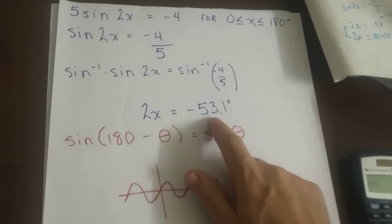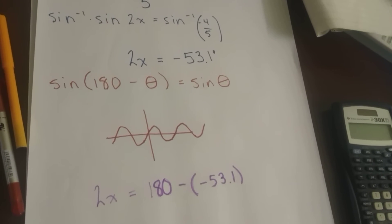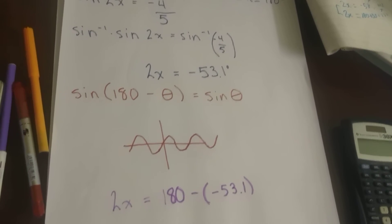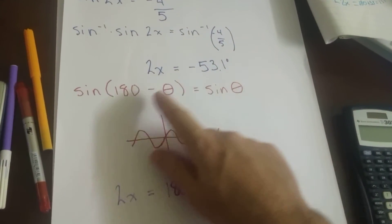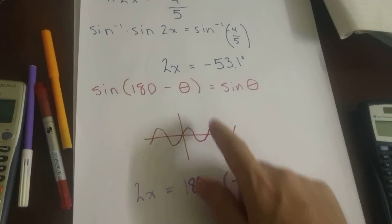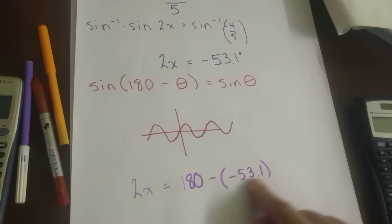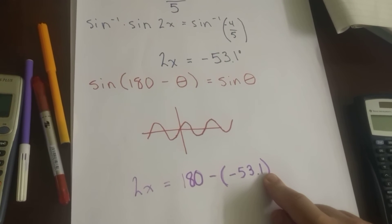So here we are. We're at 2x because 2x is equal to this angle measure. We want to subtract that angle measure from 180. And here's what we get. But we're going to divide by 2.